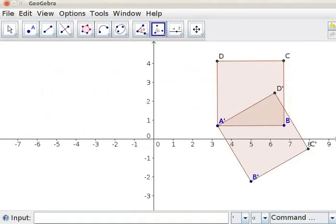This will rotate the square clockwise at a point of selection with an angle of 60 degree. The rotated image A-B-C-D- is formed. Let us move this figure aside using Move tool.